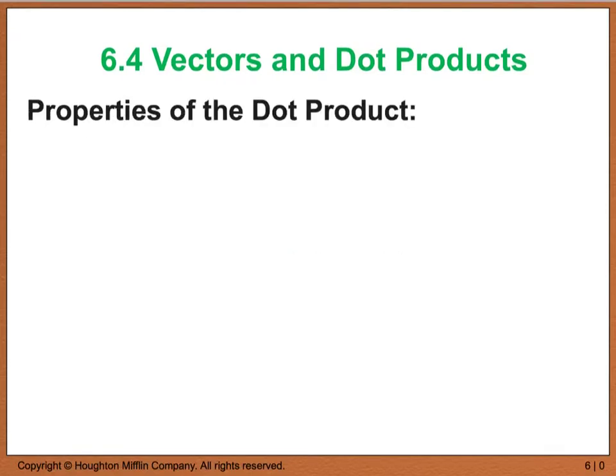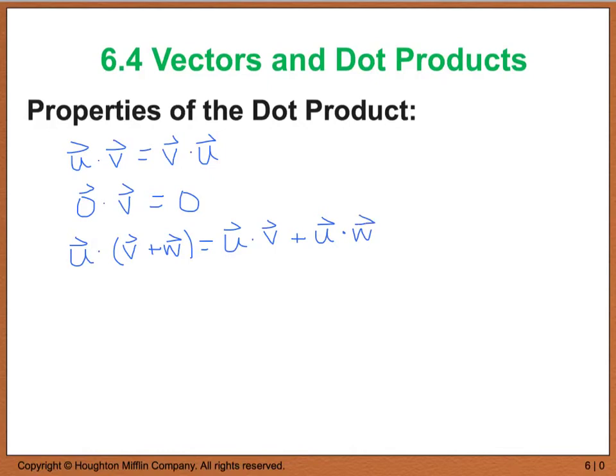If you open your book to page 460 you'll see that you have five properties of dot products. One is u dot v is the same thing as v dot u. If we take our zero vector and multiply it by vector v, this is still going to give us zero. Vector u dot with v plus w is going to be the same thing as vector u dot vector v plus vector u dot vector w. So it's kind of like you distribute it.